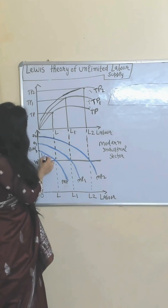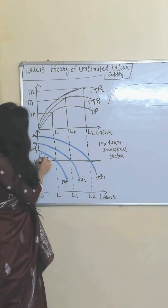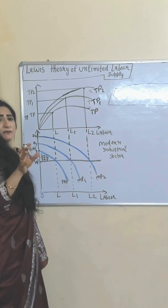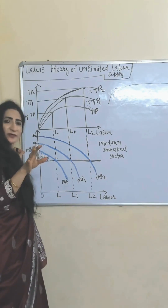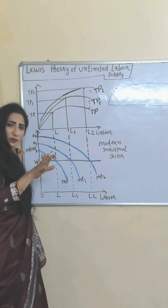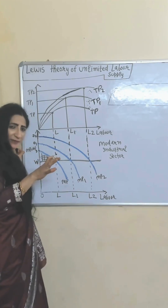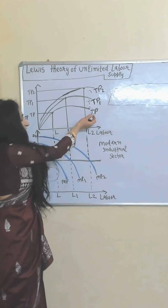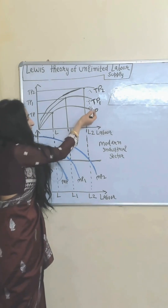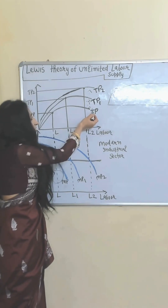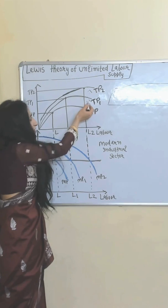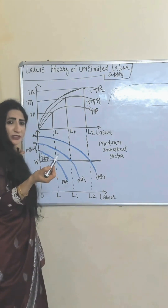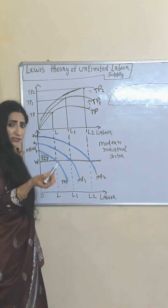That's why this part will be called the profit of the modern industrial sector. With this profit they will accumulate capital, their output increases, and that's why the TP curve shifts forward from TP to TP1.